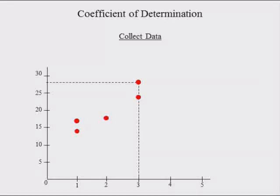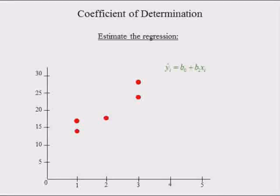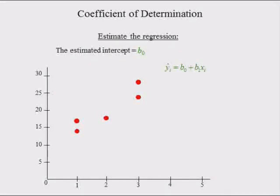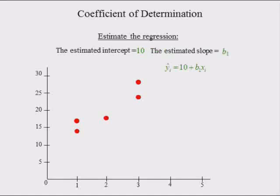The regression equation is estimated by hand using the equations for the slope and intercept. We could have used Microsoft Excel to estimate this equation. The estimated intercept B0 was equal to 10, giving us y-hat equal to 10 plus B1 times xi. The estimated slope was equal to 5 cars per ad, so the estimated regression equation is y-hat equal to 10 plus 5 times x.